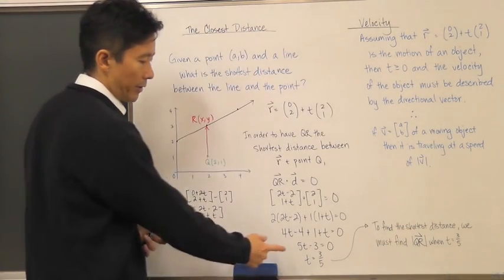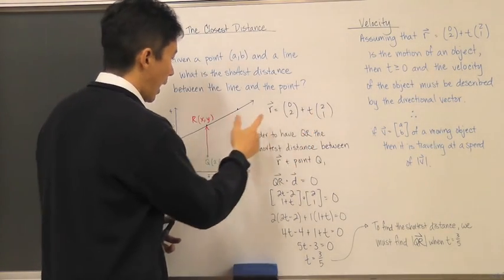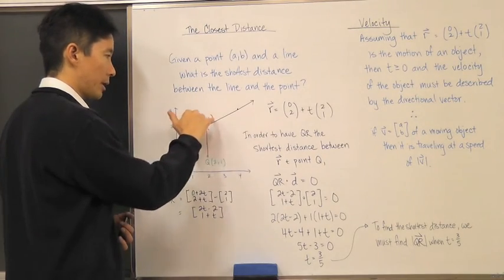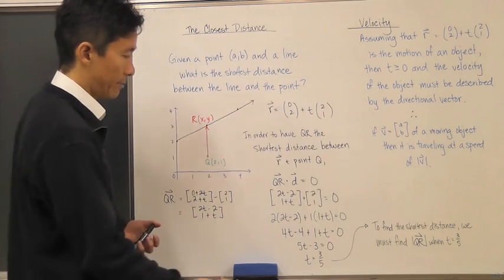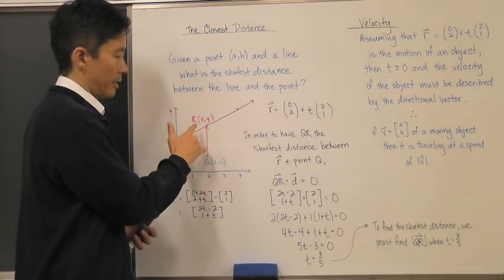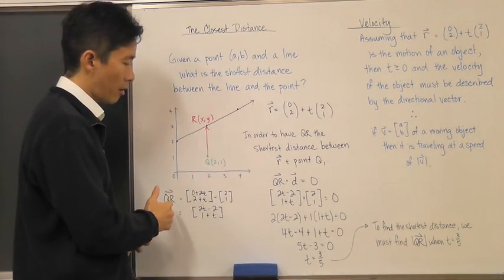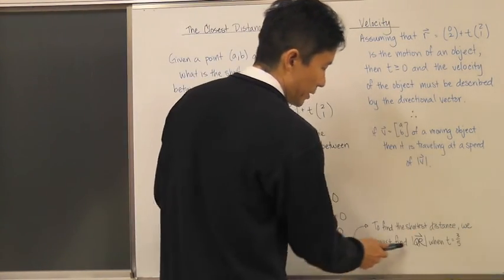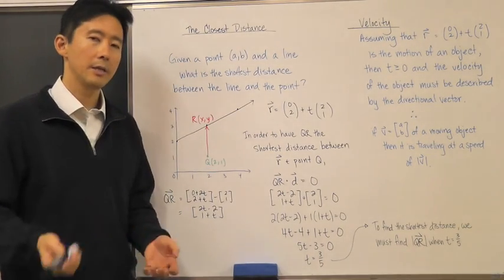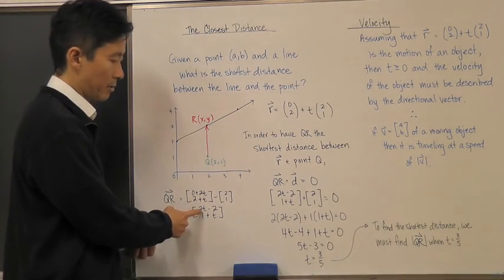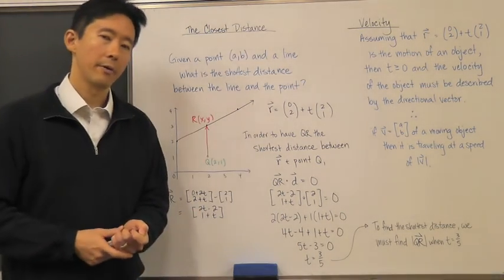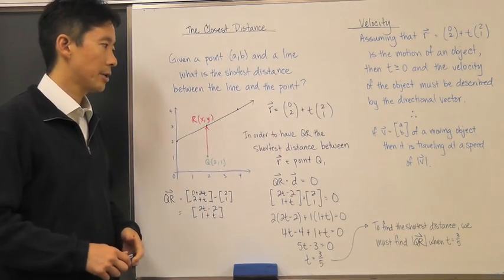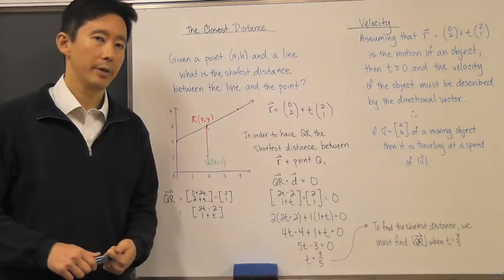Substituting t = 3/5 gives a point R on the line, and the vector QR drawn from Q to R is perpendicular to the directional vector of the line. To find the shortest distance, we find the magnitude of vector QR when t = 3/5. We substitute 3/5 into the expression for QR and calculate its magnitude — that's our answer. This is how we use vectors and the scalar product to find the shortest distance between a line and a point.